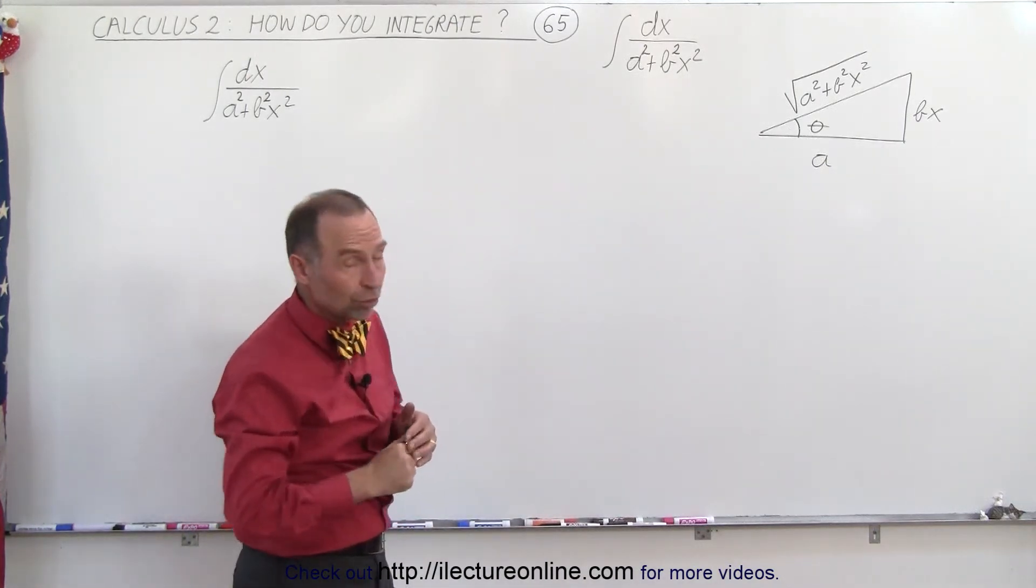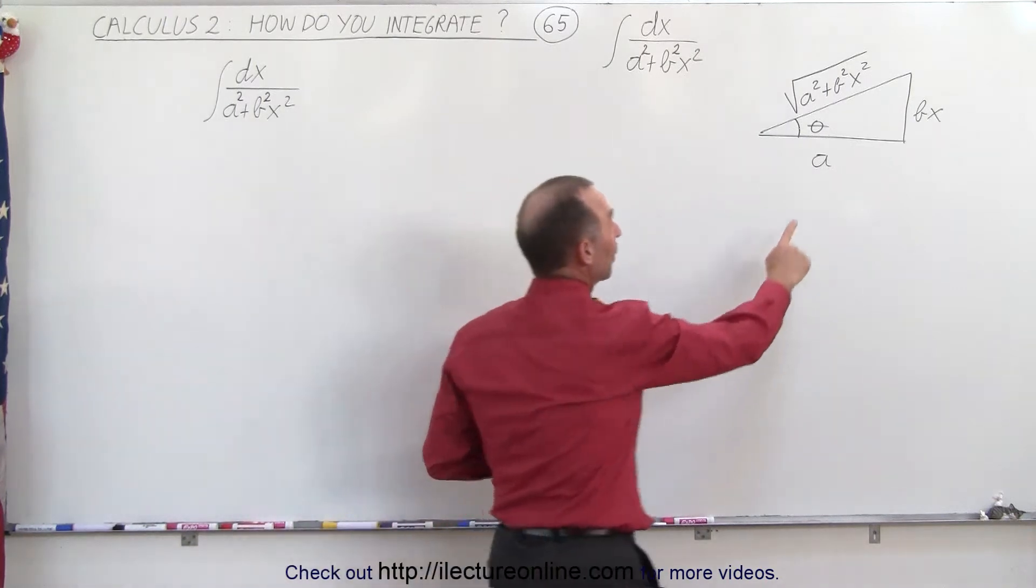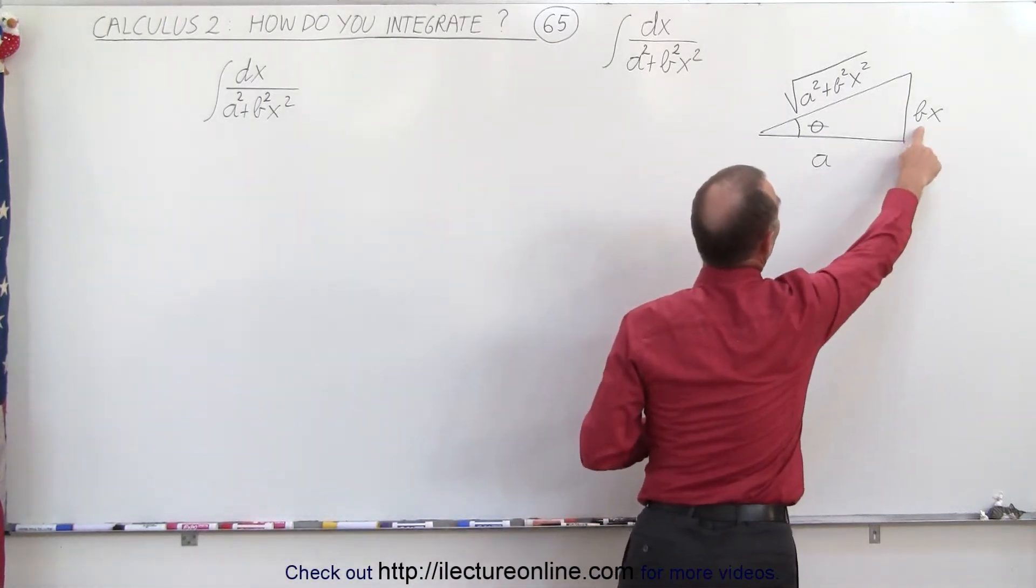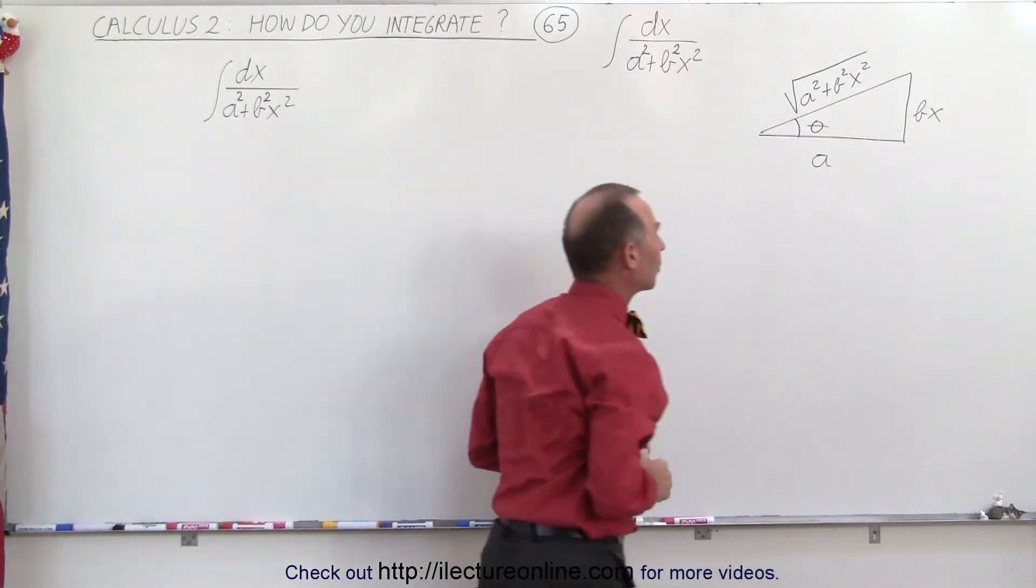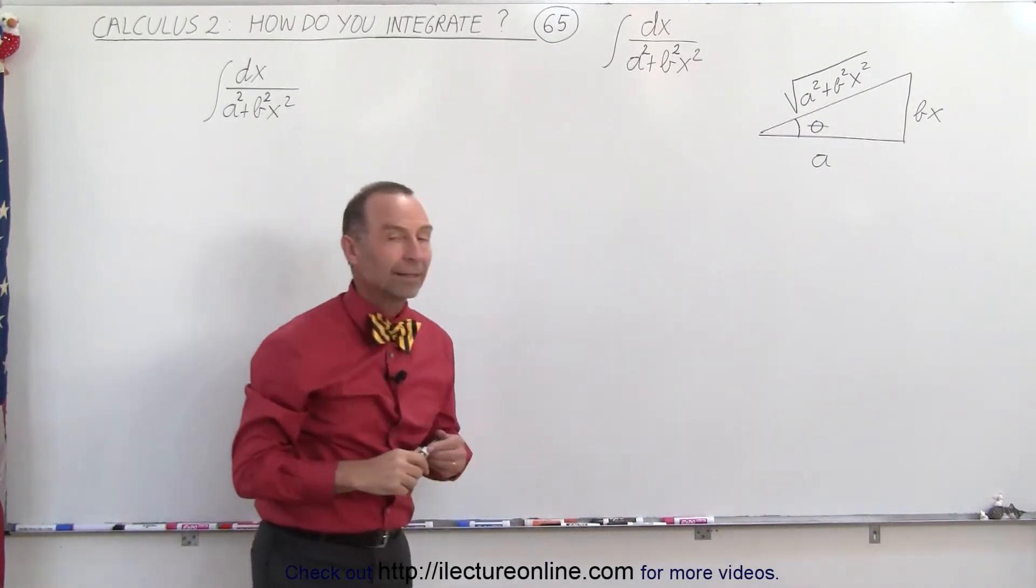Again, we're going to use trig substitution, but instead of having the square root of A and the square root of B over here, we simply have an A and a B, and the hypotenuse becomes the square root of A-square plus B-square times X-square.